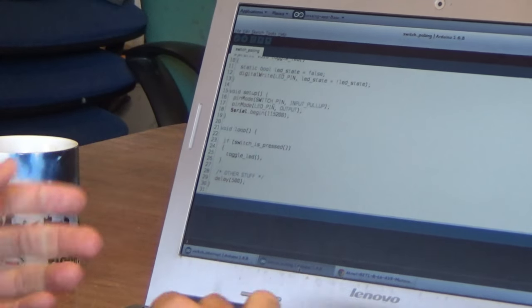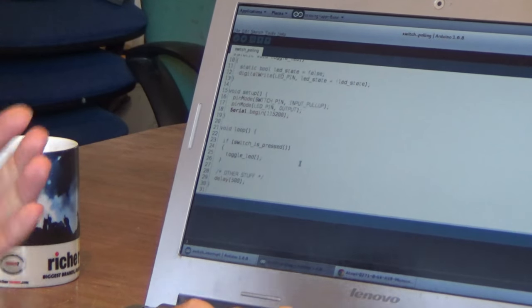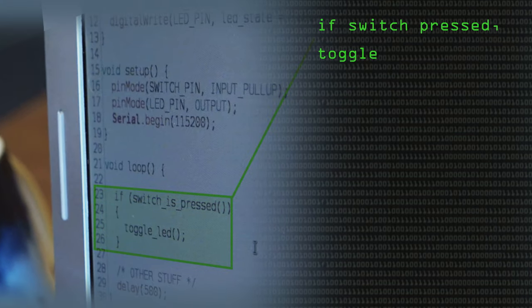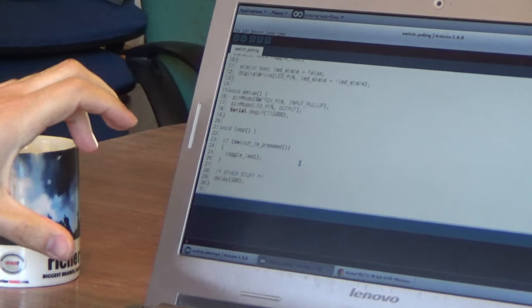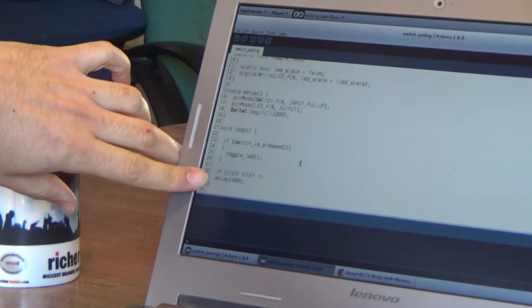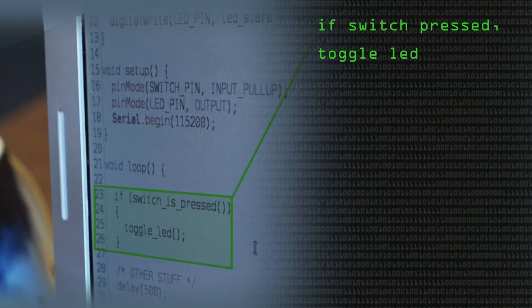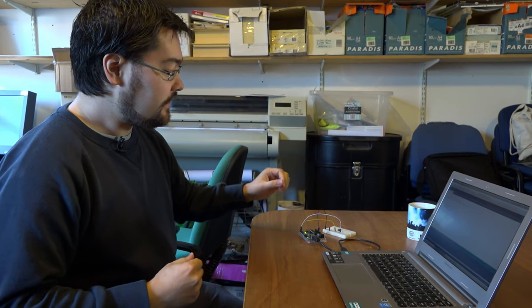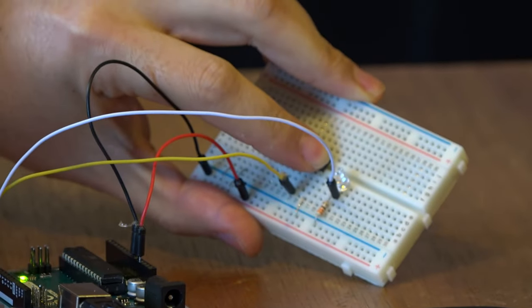The way you might start writing code for that is you've got your main Arduino loop. If the switch is pressed, toggle the LED. That's fairly simple but if you've got a bunch of other stuff in your program, say here we've just simulated and said that other stuff takes 500 milliseconds to run. You might be writing a load of data to an SD card, you might be doing a bunch of complex maths or something that takes a lot of time and that lot of time means that sometimes we'll miss that button press.